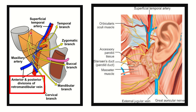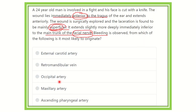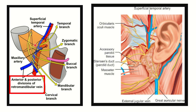Here we can see the facial nerve, which is lateral. The question states the injury is mainly superficial and immediately inferior to the main trunk of the facial nerve. Looking at this picture, just below the facial nerve there is a vein — not an artery — so the source of the bleeding from there is the vein.